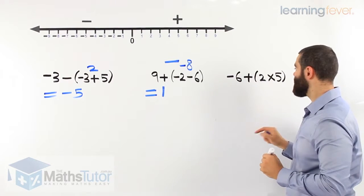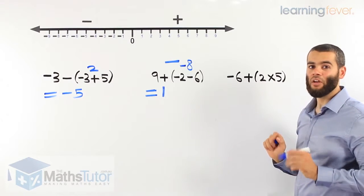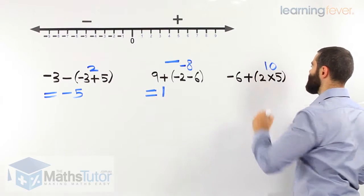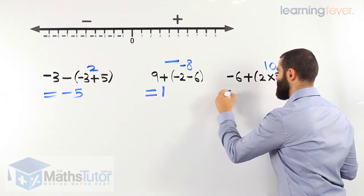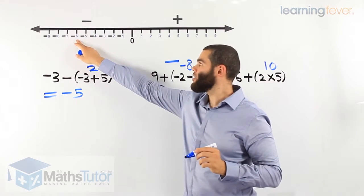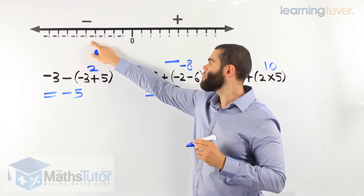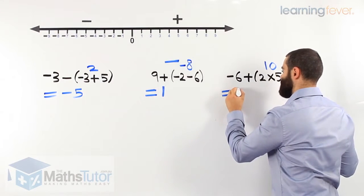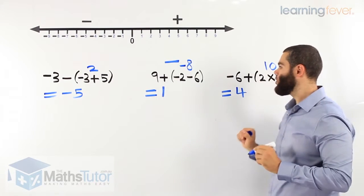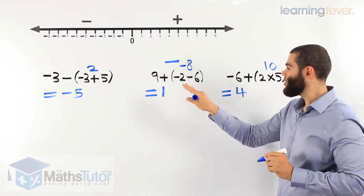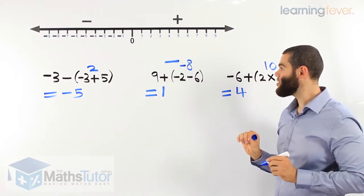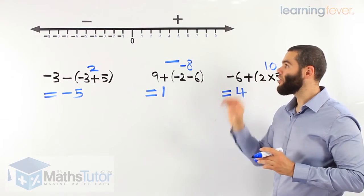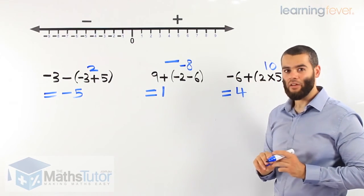One last example: negative 6 plus, in brackets, 2 times 5. Order of operations — complete the brackets first. 2 times 5 is 10. Then negative 6 plus 10. We start at negative 6 and add 10 going right: 1, 2, 3, 4, 5, 6, 7, 8, 9, 10. Our answer is positive 4, or just 4. We've done three examples using order of operations. If we follow the steps and the process, we won't go wrong. The more practice you do with the number line, the better you get — and hopefully later on you won't even need the number line at all.